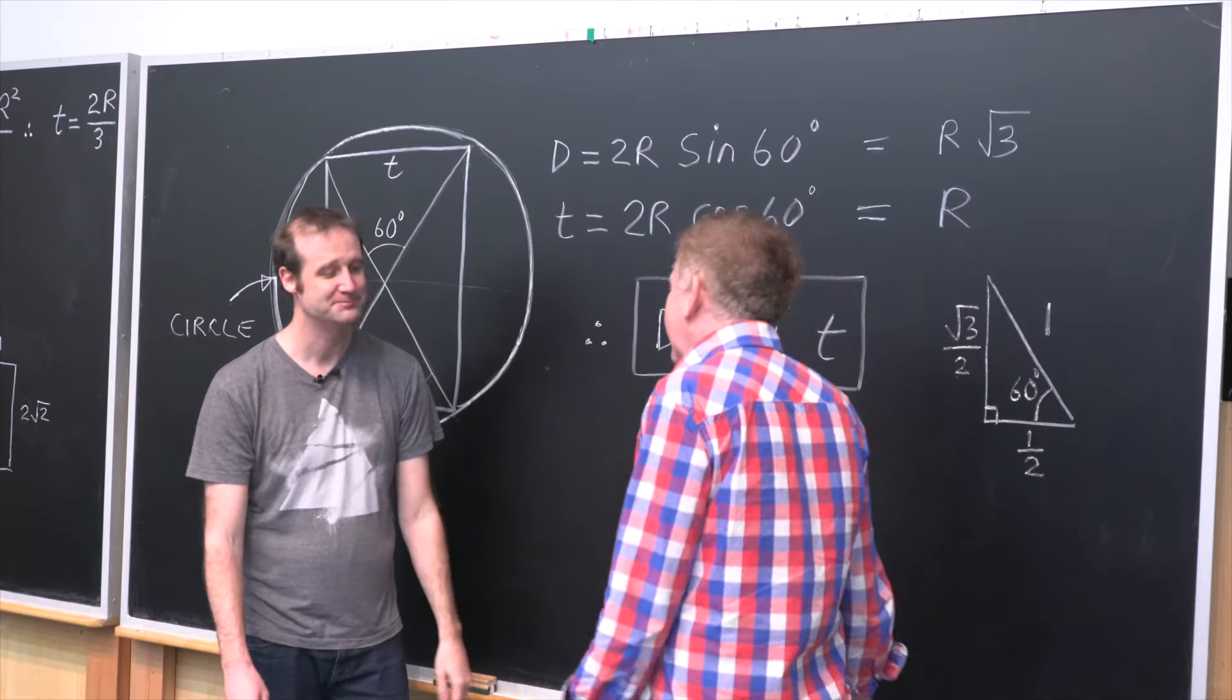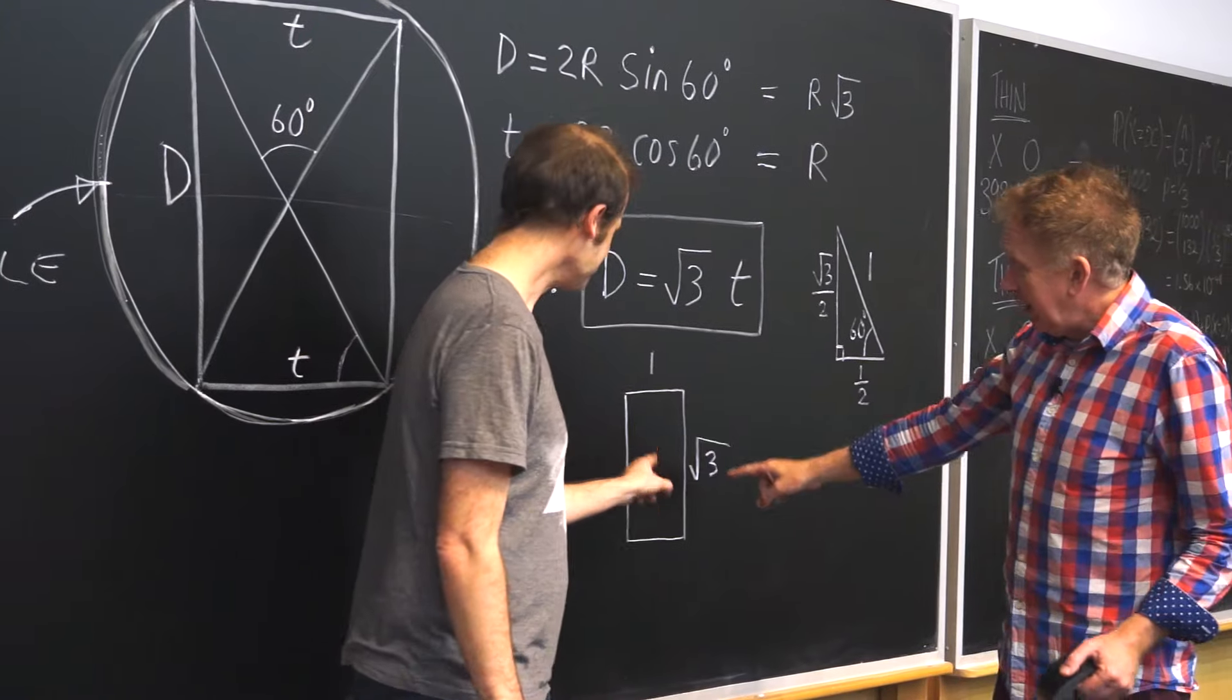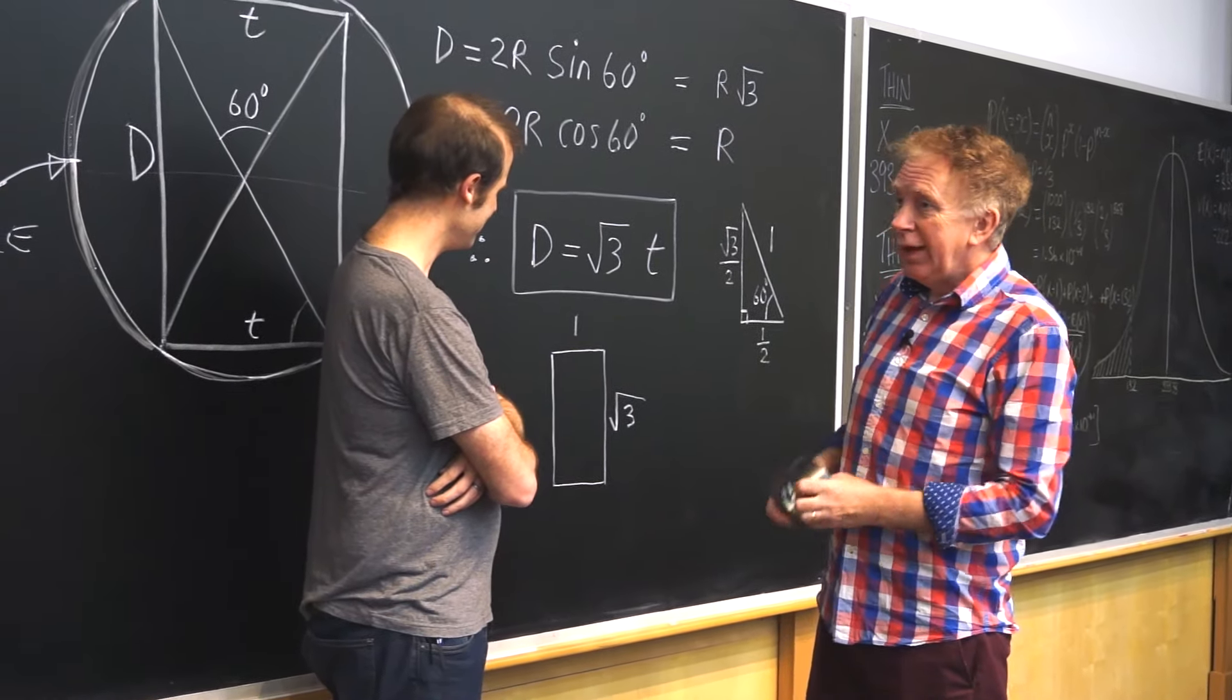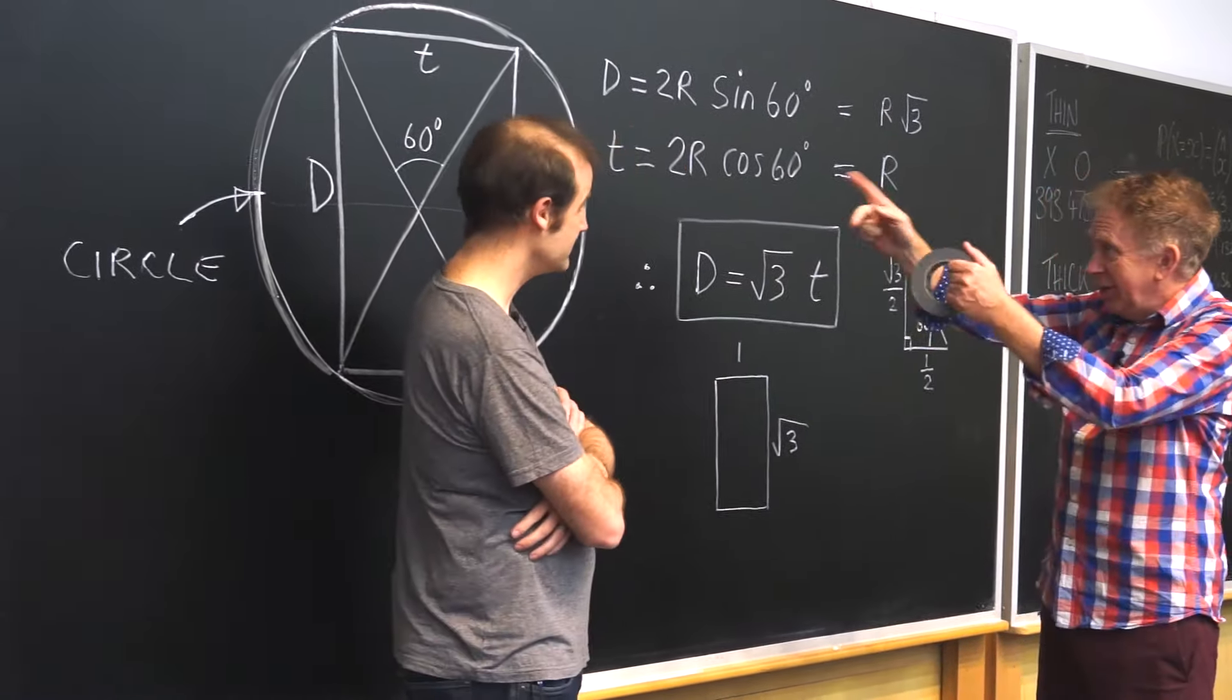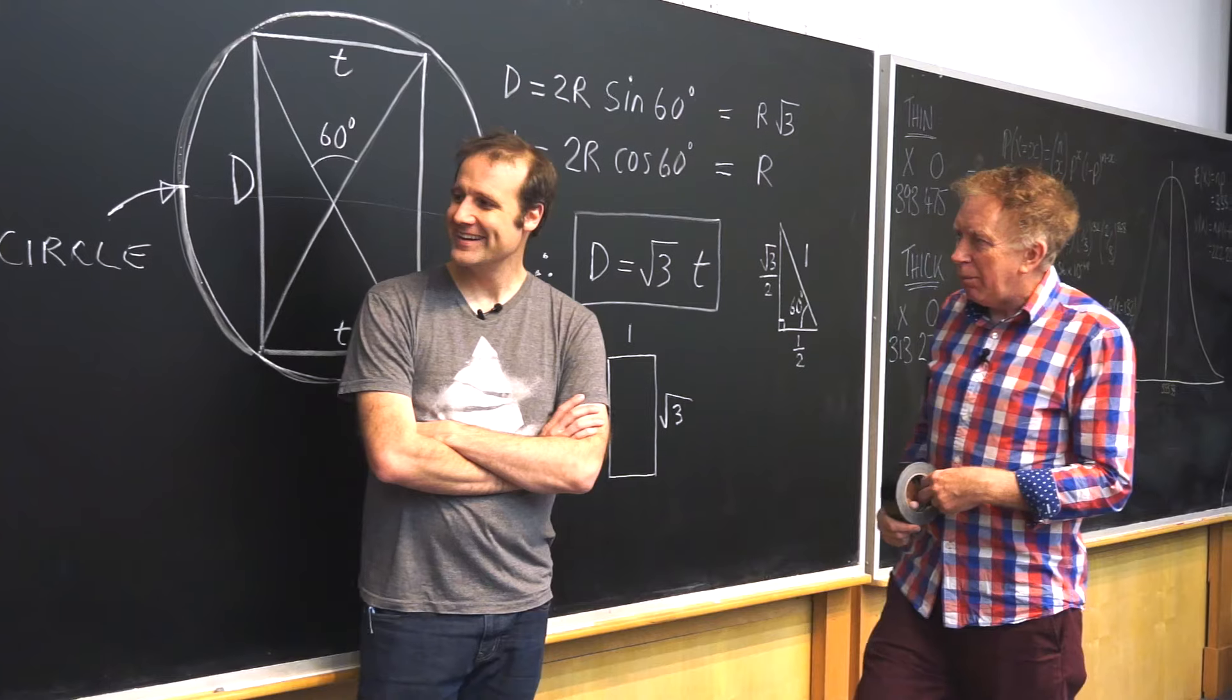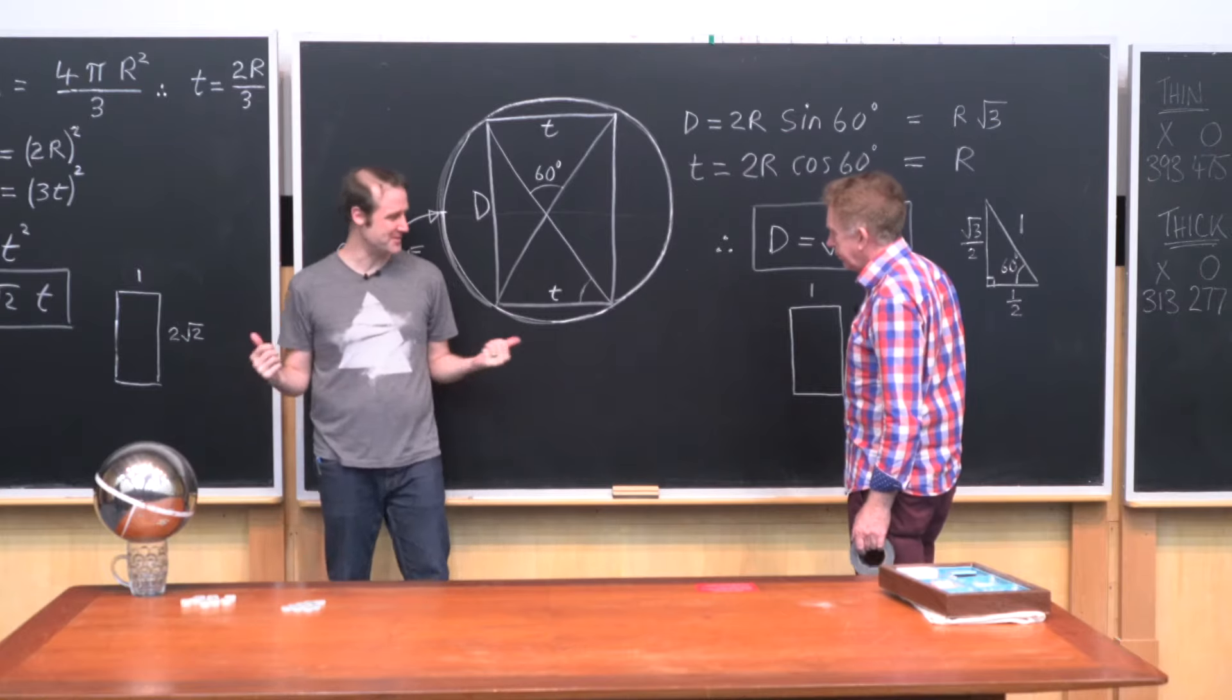So you end up with the diameter of your coin needs to be root 3 times the thickness to get the equal parameters on this circle. When we did it for the sphere, we got 2 root 2. We did it for this circle, we get root 3. And probably neither of them are right. But I'd like to know which is close.